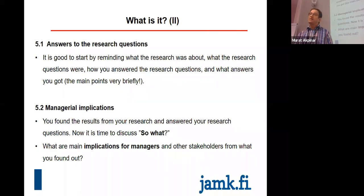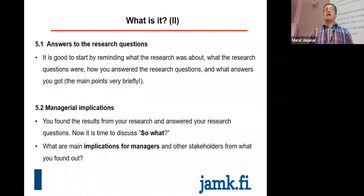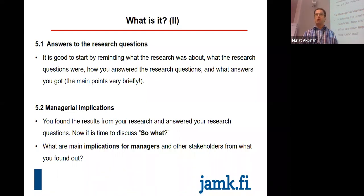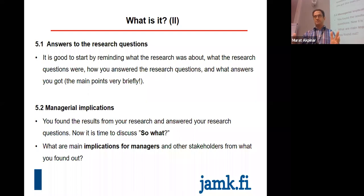We start by reminding the reader what was the objective of the thesis and what were your research questions - this is like the conclusion chapter. Then very briefly, what answers did you get for your research questions? In the results chapter you provide detailed answers; here the idea is not to rewrite all of that, but to very briefly summarize what the answers are. That is the first section under the discussion chapter.